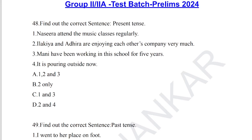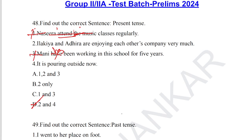Question number 48: find out the correct sentences. (1) 'Ilakya and Adhira enjoying each other's company very much' — incorrect, missing verb. (2) 'Mani has been working for this school for five years' — correct. (3) 'It is pouring outside now' — incorrect. (4) 'Nazira attends the music class regularly' — attends is correct (does + attend = attends for singular). Options two and four are correct, so option D is the answer for question number 48.